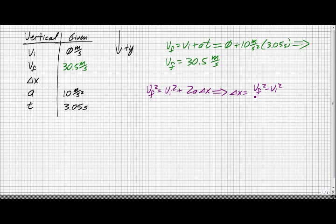All I have to do now is plug in my variables. Delta x equals thirty point five meters per second squared minus zero squared all over two times ten meters per second squared. And if I do that, I come out with the value around forty six point five meters.